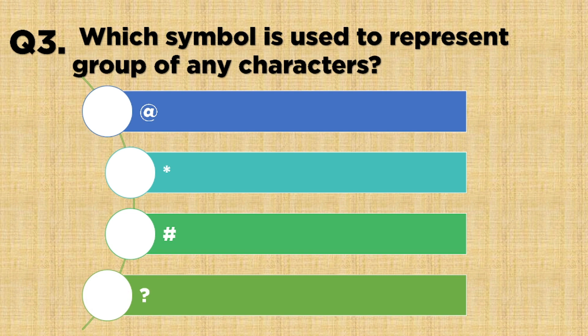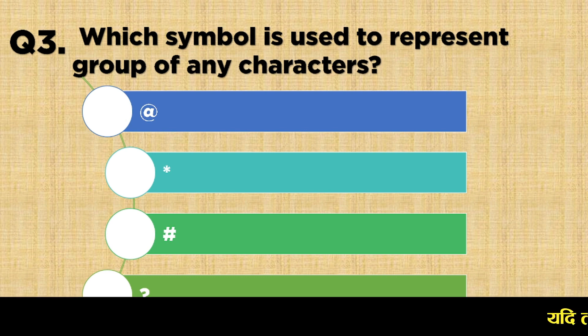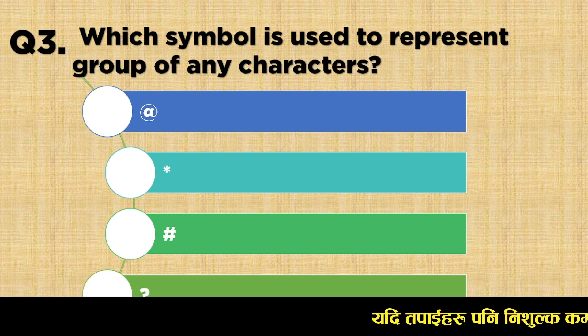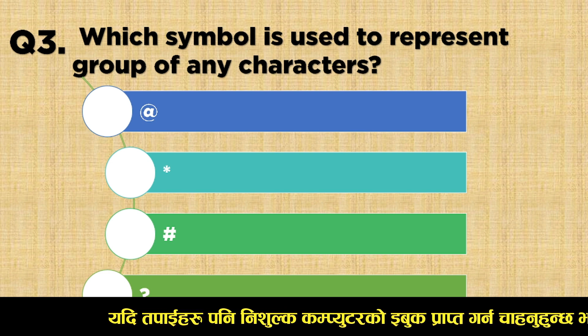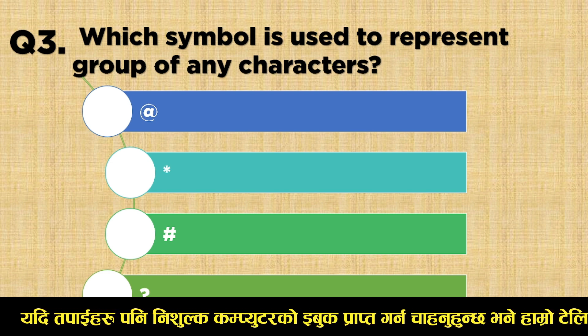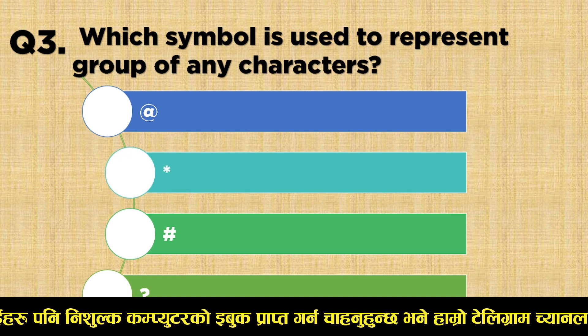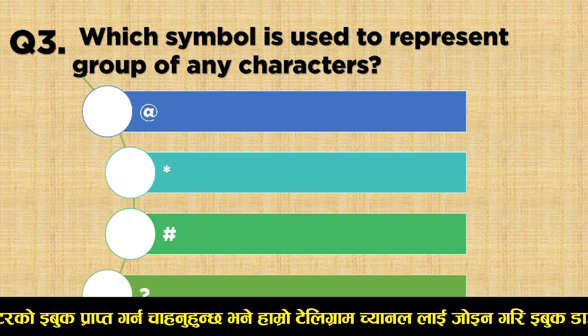Question number 3: Which symbol is used to represent a group of any characters? The options are: Either it, asterisk, hatch, or another symbol. The correct answer is asterisk.